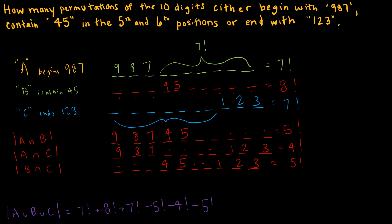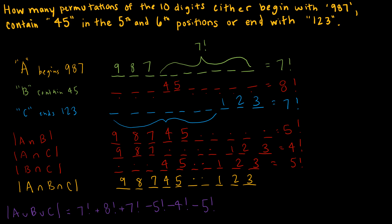Finally, I need to add back the triple intersection A∩B∩C. With 9, 8, 7 at the start, 4, 5 in positions 5-6, and 1, 2, 3 at the end, I only have 2 positions left to permutate — giving 2 factorial. Adding back 2!, and working it all out gives a final answer of 50,138 different permutations for those 10 digits given these stipulations.